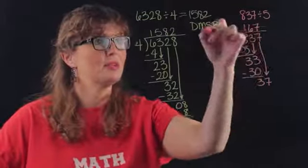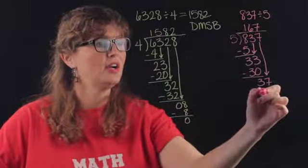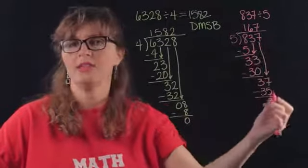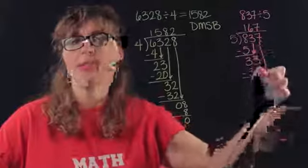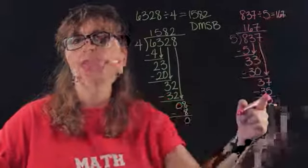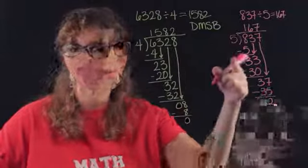Multiply, seven times five is thirty-five. Subtract, bring down. So our answer here is not just 167 but 167 and two-fifths.